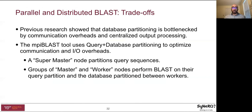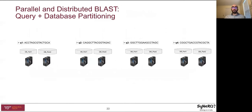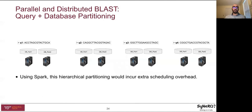MPI BLAST implements hierarchical partitioning by having a supermaster node that partitions queries dynamically to groups or sub-clusters, each consisting of a master and a group of workers. For example, the supermaster partitions the query to these groups, and each group has a replica of the database partitioned across workers inside the group. This design allows MPI BLAST to optimize communication, computations, and IO. However, since we look to use Spark to optimize other design parameters such as upgradability and fault tolerance, this hierarchical partitioning would incur extra scheduling overhead, because previous research has shown that Spark is bottlenecked by its scheduler.